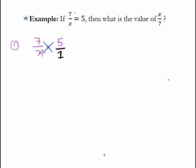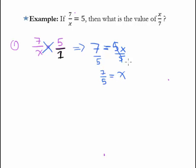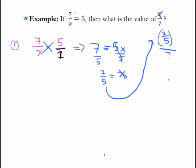We can go cross-multiply. We get 7 times 1, which is 7, equals x times 5, which is 5x. So 7 equals 5x. I can divide both sides by 5, so now x equals 7 fifths. The question is asking what is x over 7, so I can just substitute that value of x in. I end up writing x over 7 as 7 fifths over 7, which is the same as 7 fifths times 1 seventh. I can cancel out the 7s, and this whole thing equals 1 fifth.